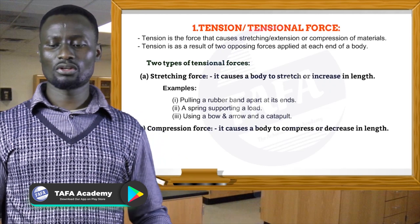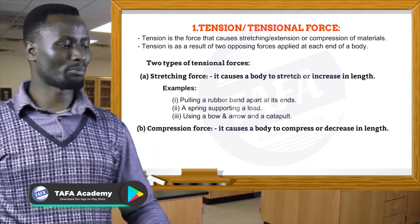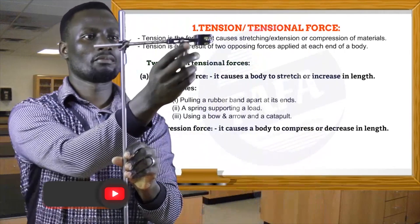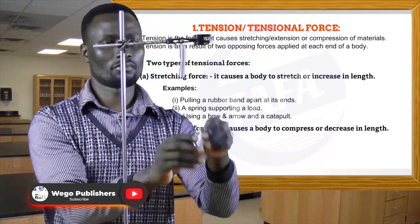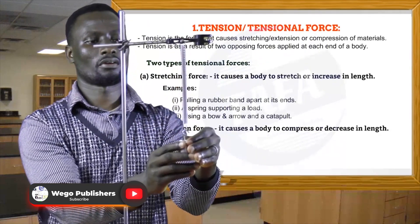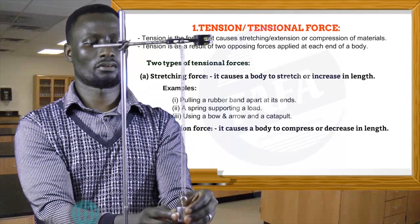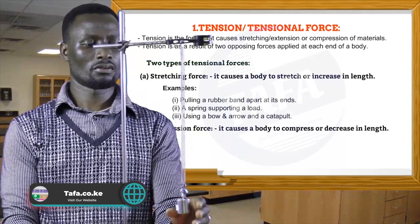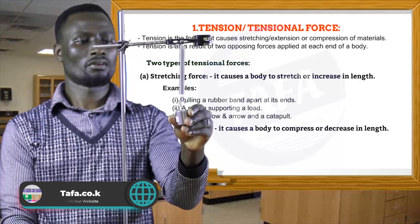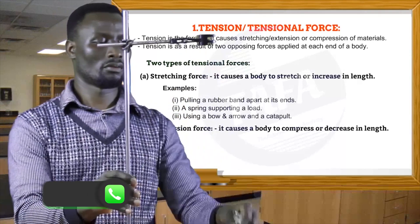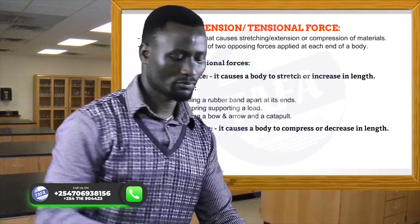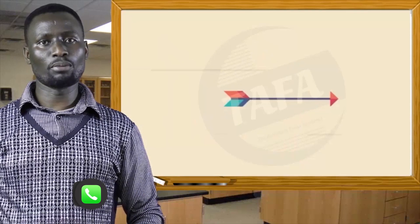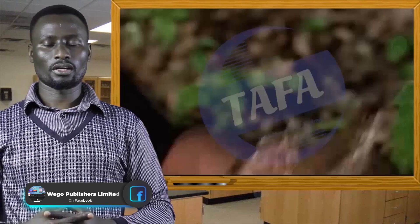Number two: a spring supporting a load. And number three: using a bow and arrow, and a catapult.